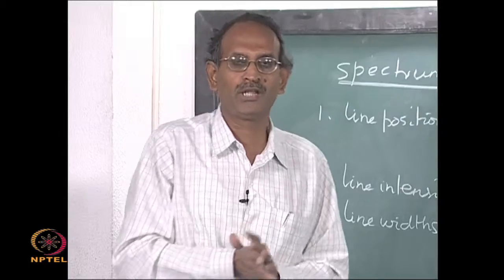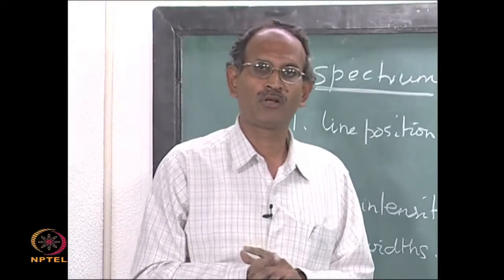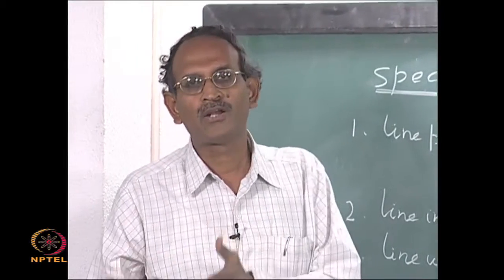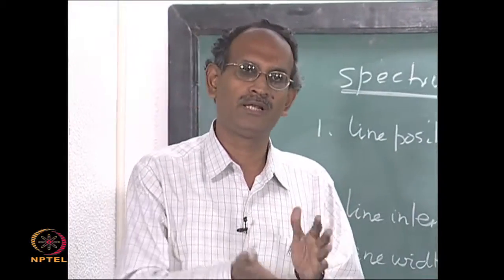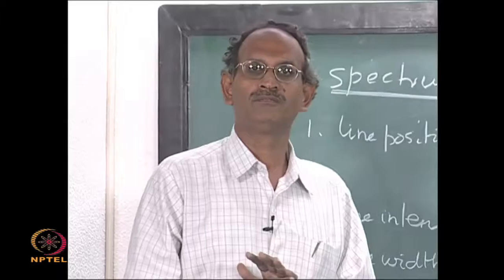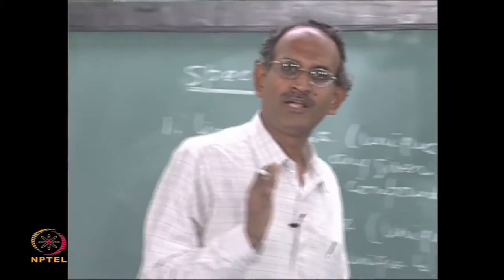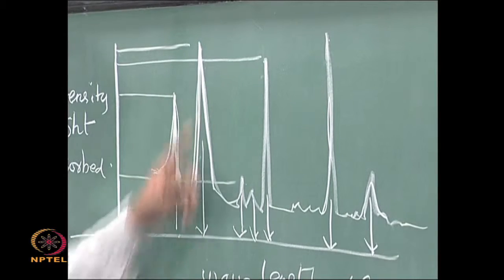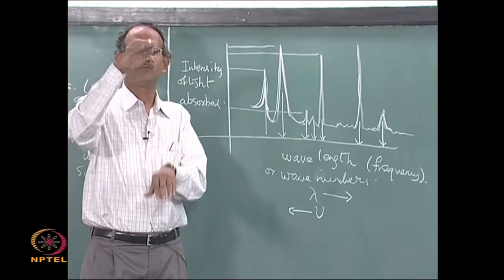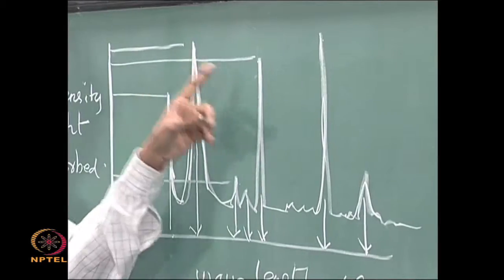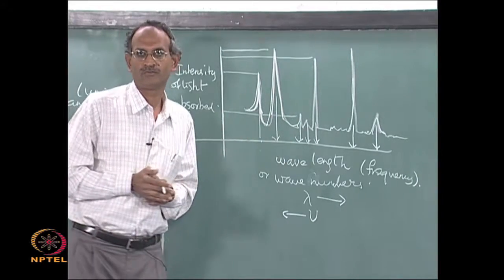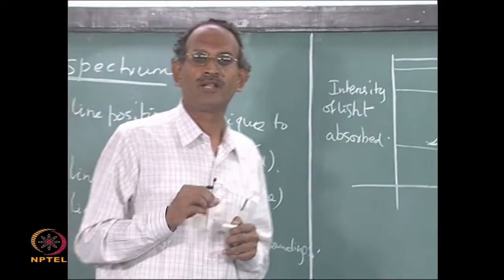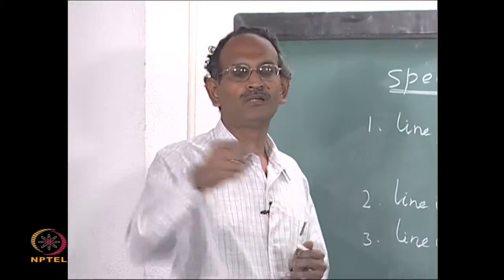So in any spectrum — whether it is a radio wave spectrum for nuclear magnetic resonance spectroscopy, a microwave spectrum for molecular rotational spectroscopy, an infrared spectrum of a typical organic compound, or an x-ray spectrum — irrespective of the radiation, every spectrum will have these three distinct features: line positions, line widths, and line intensities. These are three common characteristics for every substance in every region of the spectrum. Let us now look at the qualitative reasons.